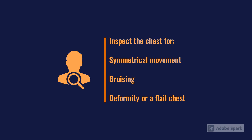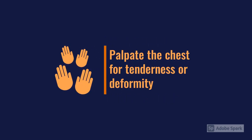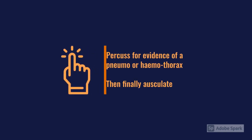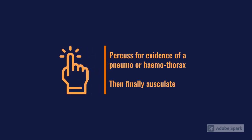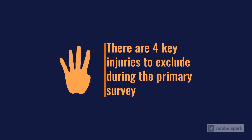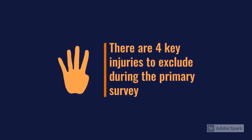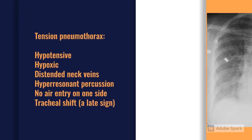You want palpation of the chest to assess for tenderness and any obvious rib fractures. Percussion is very important to help detect pneumothoraxes and haemothoraxes. Then finally you grab the stethoscope for a quick listen. In that initial A2E assessment, you're really trying to exclude four significant traumatic injuries.